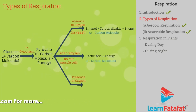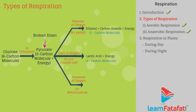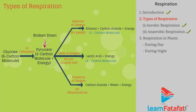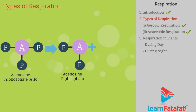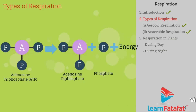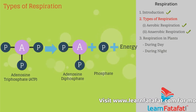Third way: in cells containing mitochondria, the pyruvate molecule is broken down in the presence of oxygen to form carbon dioxide and water, producing energy. The energy produced during cellular respiration is stored as adenosine triphosphate (ATP) molecules and used by cell organelles whenever required.